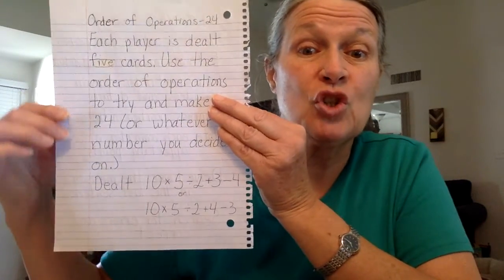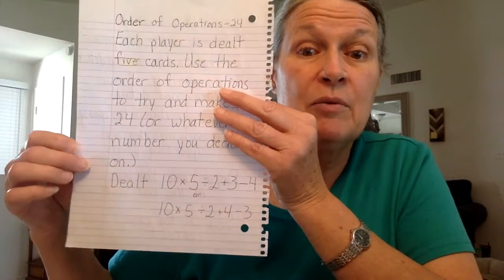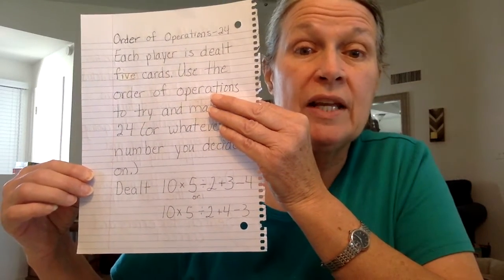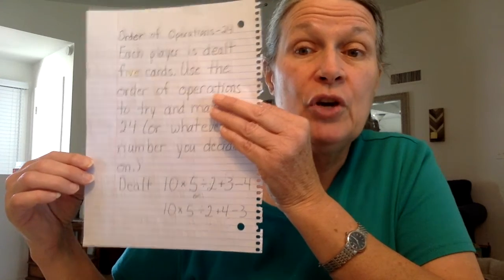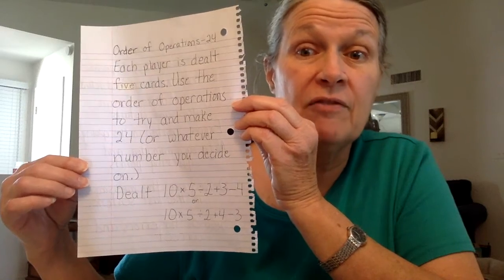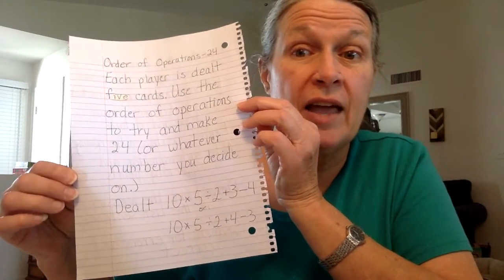If you're going for 24, I would use the first method. Whatever numbers you're dealt, try to get close to 24. Whoever is closest to 24 wins that round, then you deal out five more cards and try again.